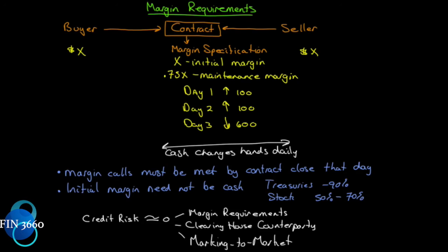Let's have a look at the margin requirements that are specified per contract — every contract will be different. I've shown the buyer and the seller being a party to the contract. The contract has its own margin specifications, which I called X, whatever they happen to be. That's referred to as the initial margin. Both the buyer and the seller post X.